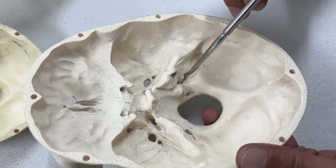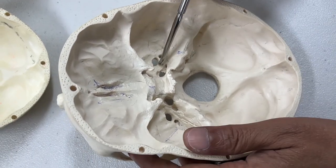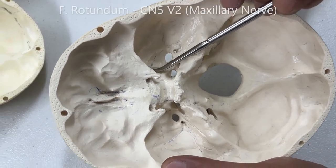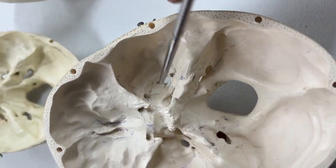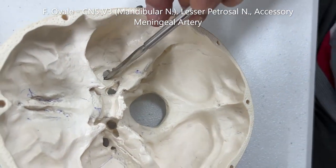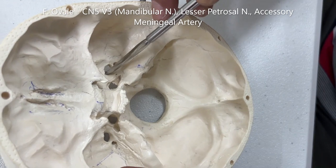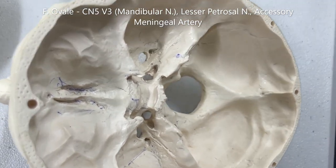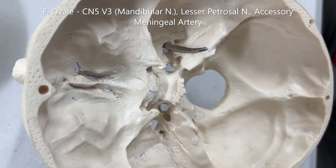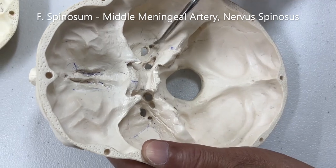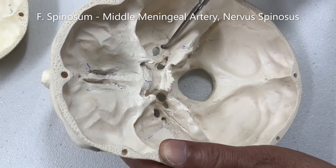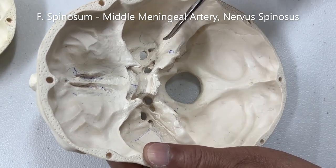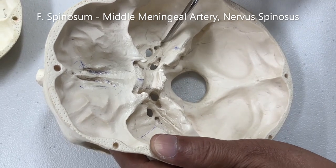To complete the story: passing through the foramen rotundum is the maxillary nerve CN5-V2; through the foramen ovale is the mandibular division CN5-V3, the lesser petrosal nerve, and the accessory meningeal artery entering the cranial cavity from the infratemporal fossa. Through the foramen spinosum passes the middle meningeal artery and the nervus spinosus — the recurrent branch of the mandibular nerve — which supplies the meninges.